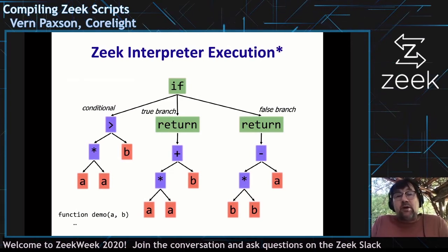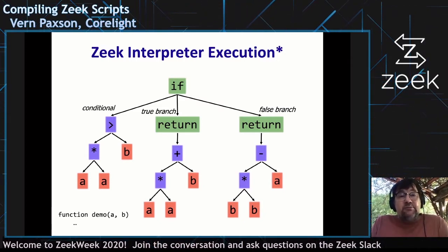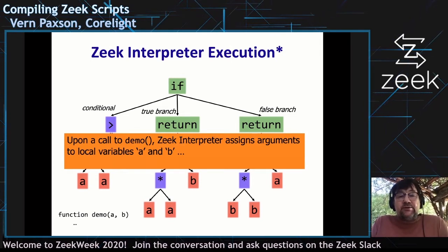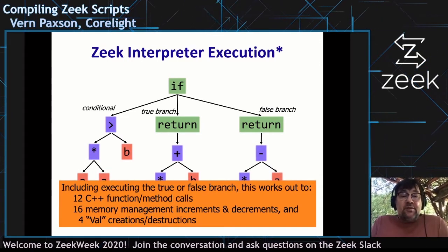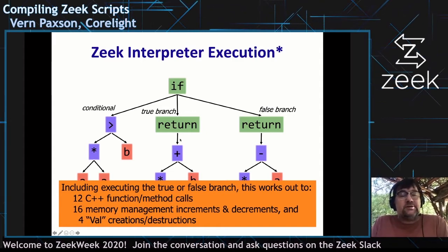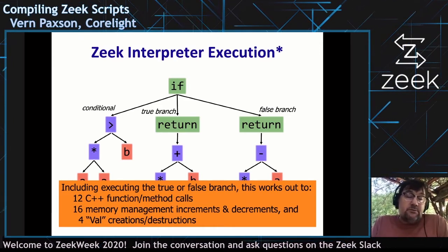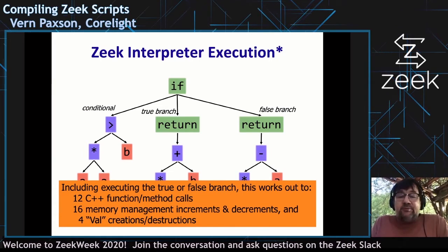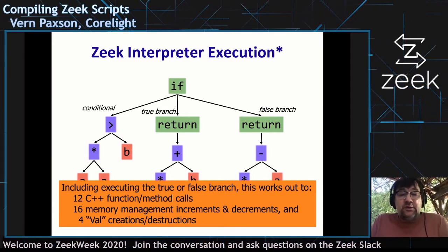We have the program representation — this tree of nodes — and how values are represented. Now we need to think about executing. The execution proceeds recursively, the arguments to the function are bound to local variables, and each element in the tree is assessed. For this particular program, there will be 12 C++ calls, which may be inlined for speed, but still — 16 memory management increments and decrements for reference counting and for Val objects that are created and destructed. That's quite a bit of work to do for that function.